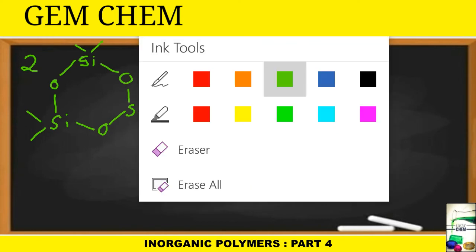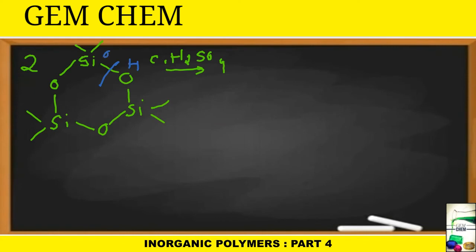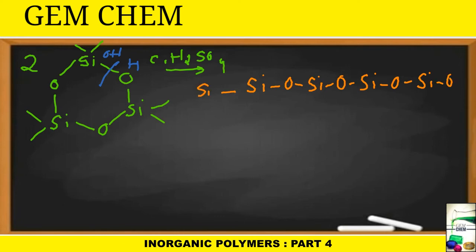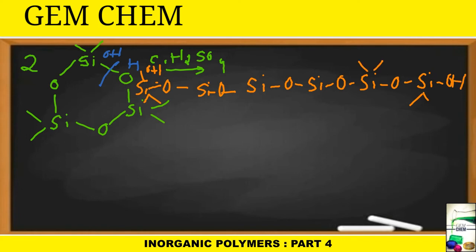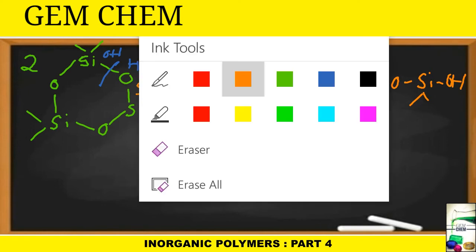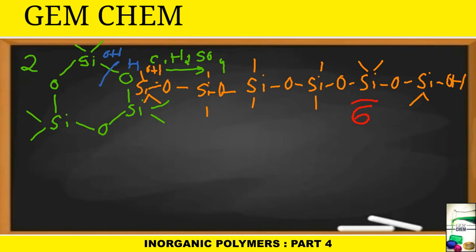When the two trimers react with concentrated H2SO4, the oxygen gets a hydrogen and silicon gets an OH group, giving an open-chain intermediate. The result is a six-silicon linear polymer: Si-O-Si-O-Si-O-Si-O-Si-O-Si, where each silicon has two CH3 groups and the terminal silicons have OH groups. So at this stage we have a six-membered linear polymer.